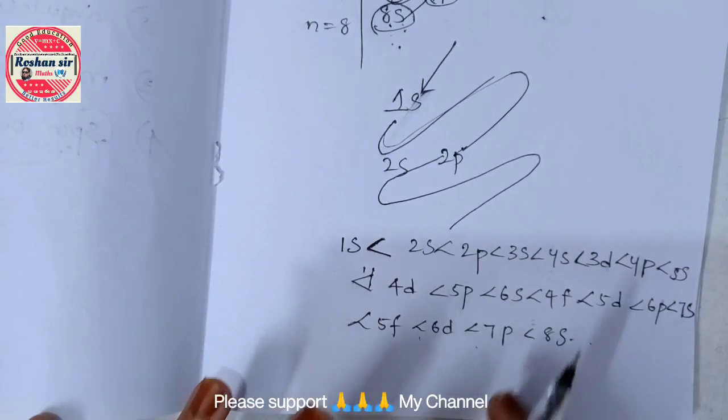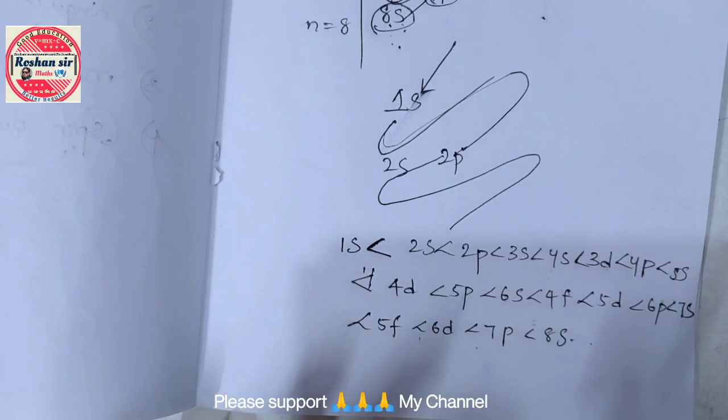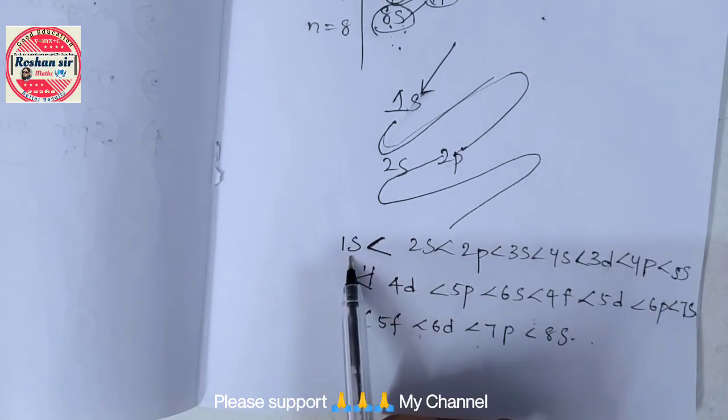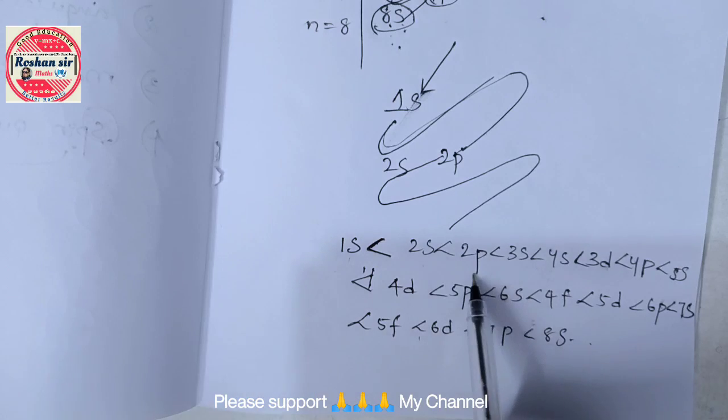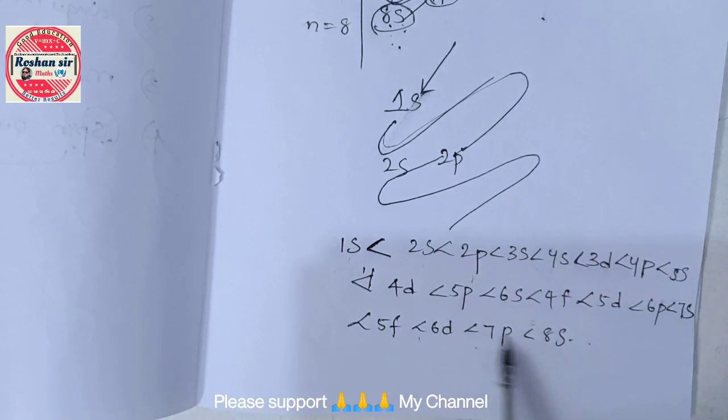From this you have to write electronic configuration: 1s², 2s², 2p⁶. So you can write electronic configuration from this Moller chart.